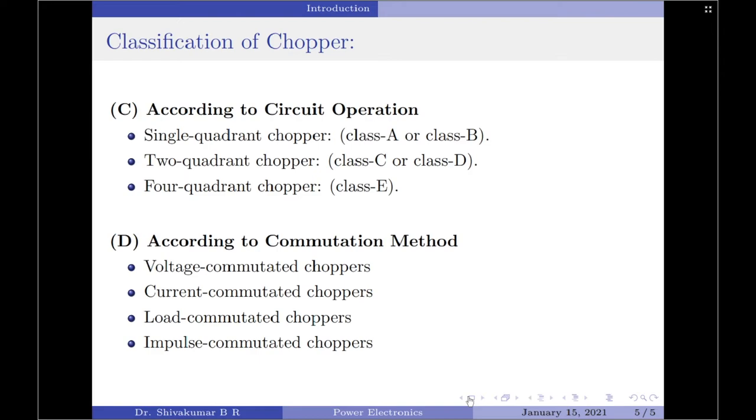Further, according to the circuit operation, choppers can be classified into 3 types. The first one is a single quadrant chopper, in which the output voltage and current both must be positive for a type A chopper and the output voltage is negative but the current is positive for a type B chopper.